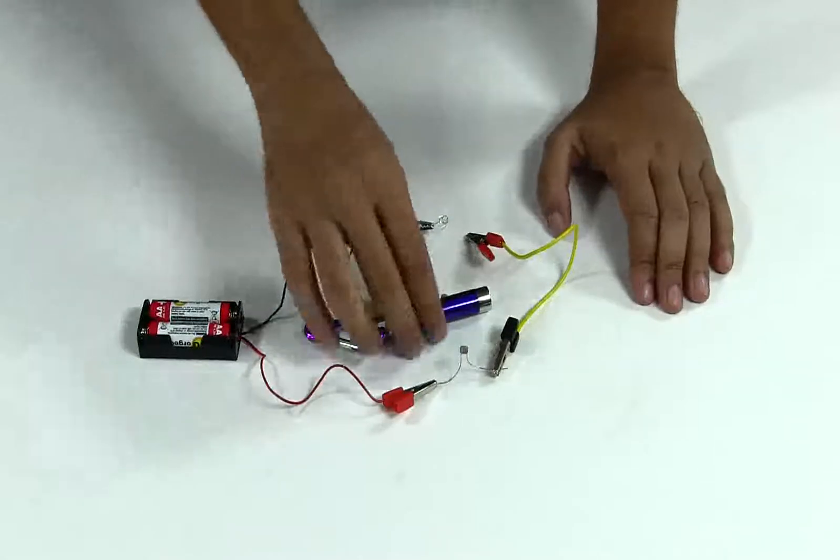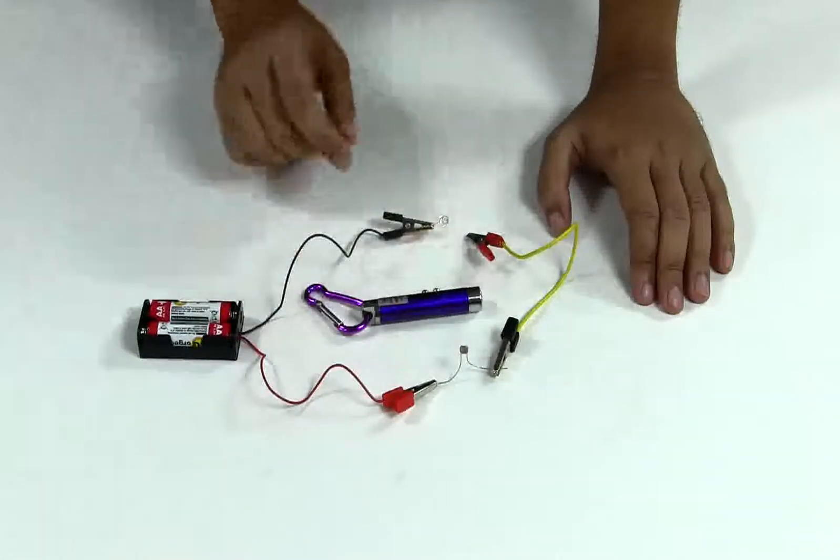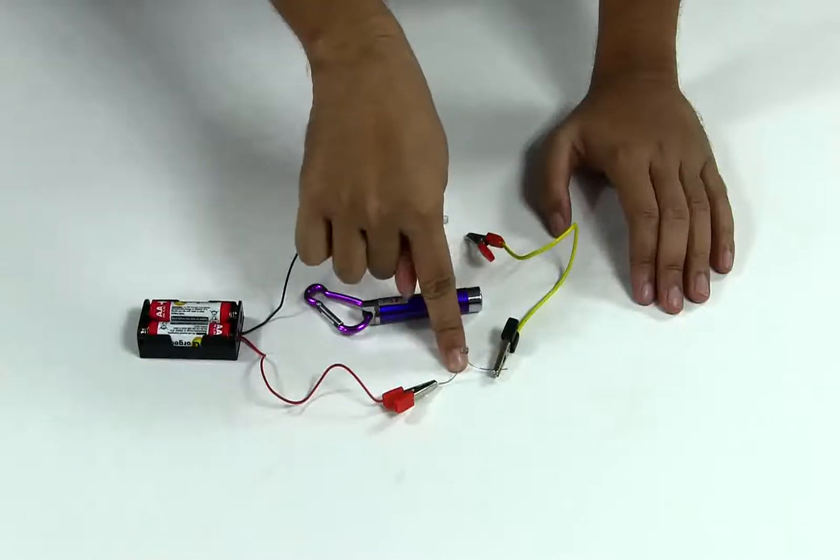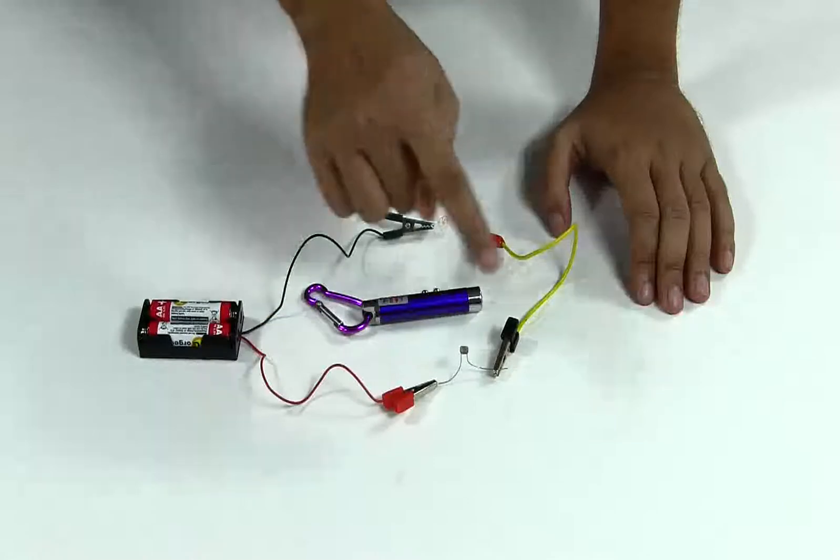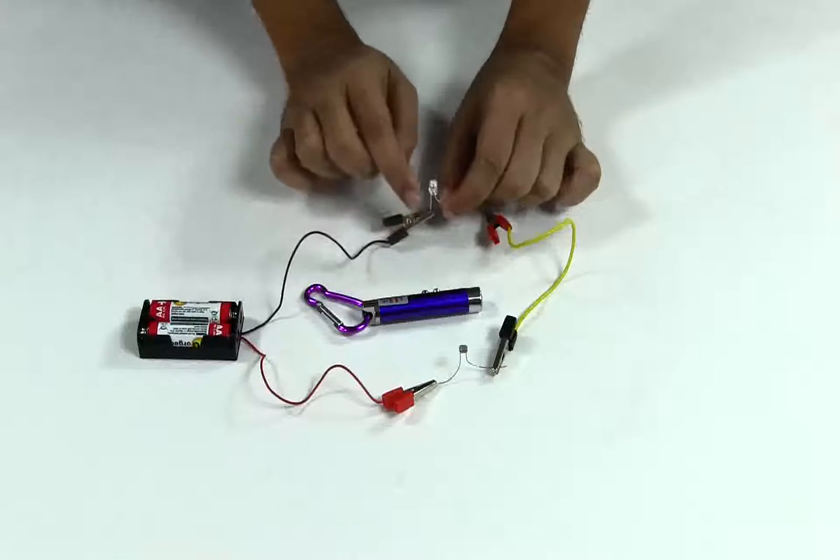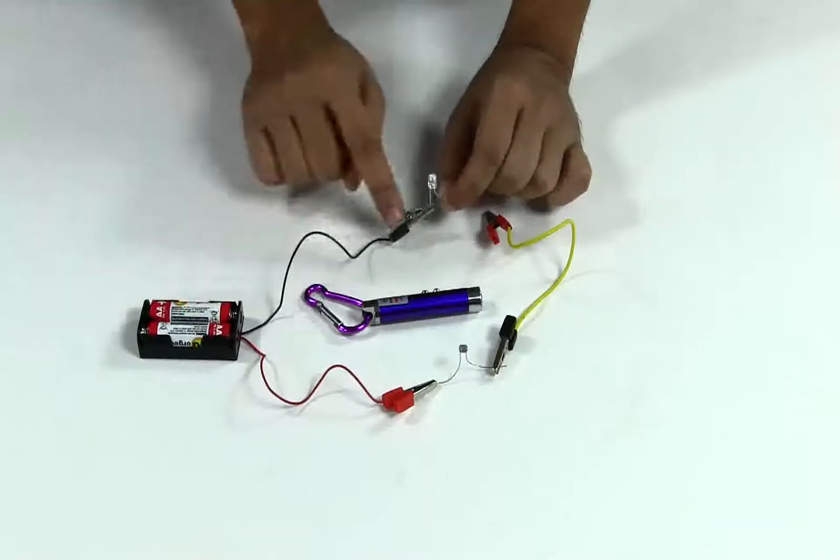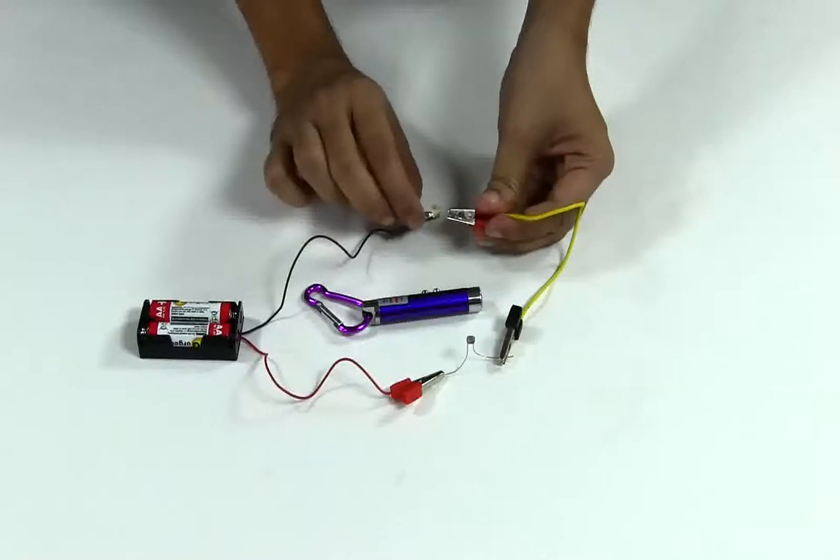In this experiment, we are going to light up an LED using another light. Here I have connected an LDR, or light dependent resistor, with this battery, and in series with it I have connected an LED. Make sure the smaller leg of the LED goes to the negative end of the battery and the other end goes here.